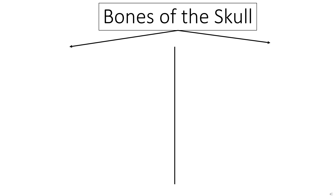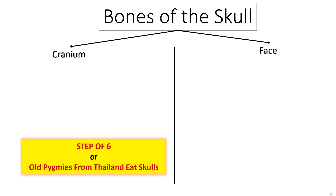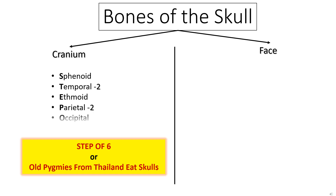Bones of the skull can be divided into those of the cranium and those of the face. Use the step of six to remember the bones of the cranium, meaning there are six bones beginning from sphenoid, temporal, ethmoid, parietal, occipital, and frontal.